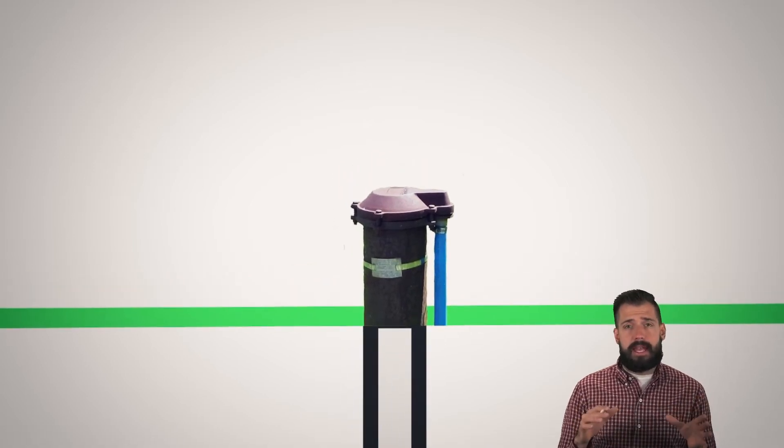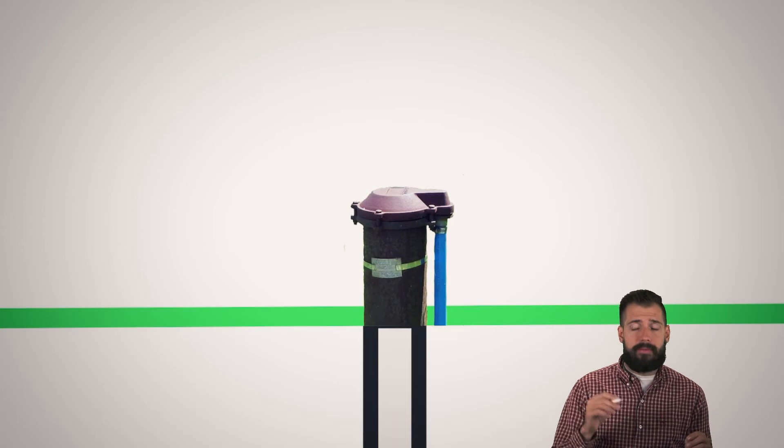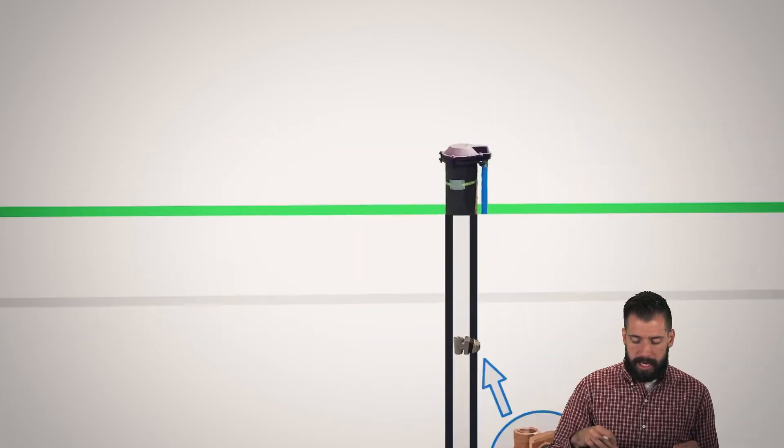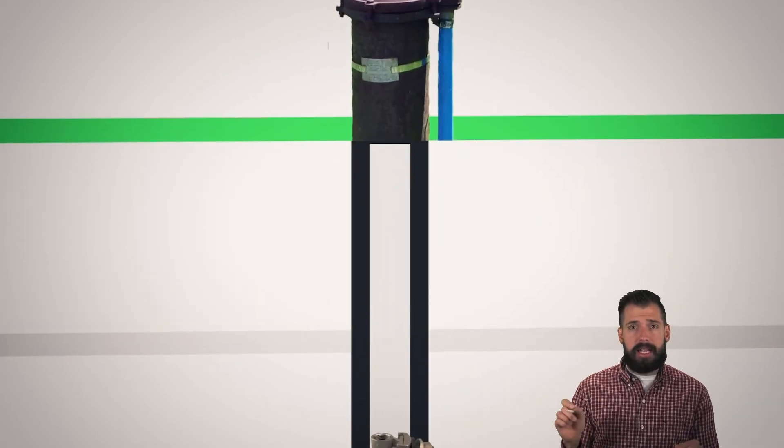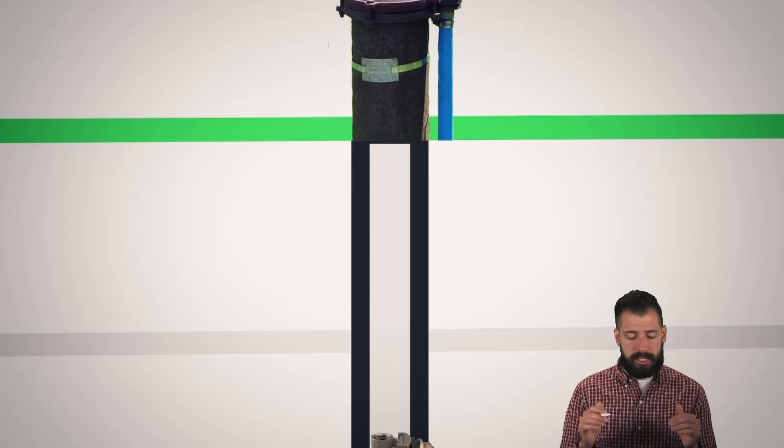So this is the head. And basically from here, we have electricity going in, we have water coming out. And if we look down a little bit further, we can see this line going across. And this line is basically our frost line.